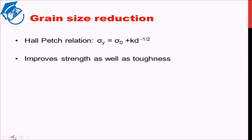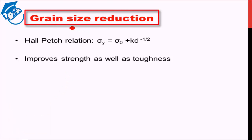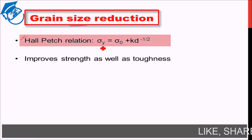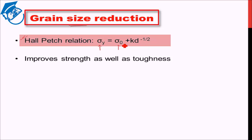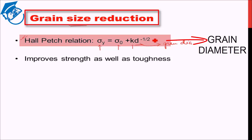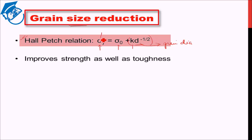The exact relation for grain size reduction leading to increase in strength is given by what is known as the Hall-Petch relation. It states that the yield strength equals an initial strength constant plus another constant times the inverse of the square root of the average grain diameter. So smaller the grain diameter, larger this term becomes and more the yield strength. This relation holds well for the microscopic scale but fails at very small or very large grain sizes, so it is normally used in the micro range.